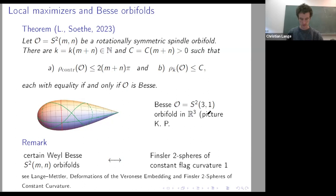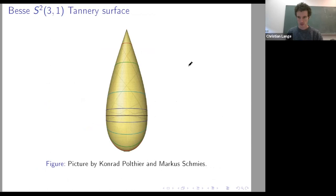There's only one Riemannian metric on S² of constant curvature one, but within the class of Finsler metrics there are many deformations keeping the curvature constant, and there is a duality between these two objects — you can translate questions back and forth. Now I want to move to the contact geometry world.